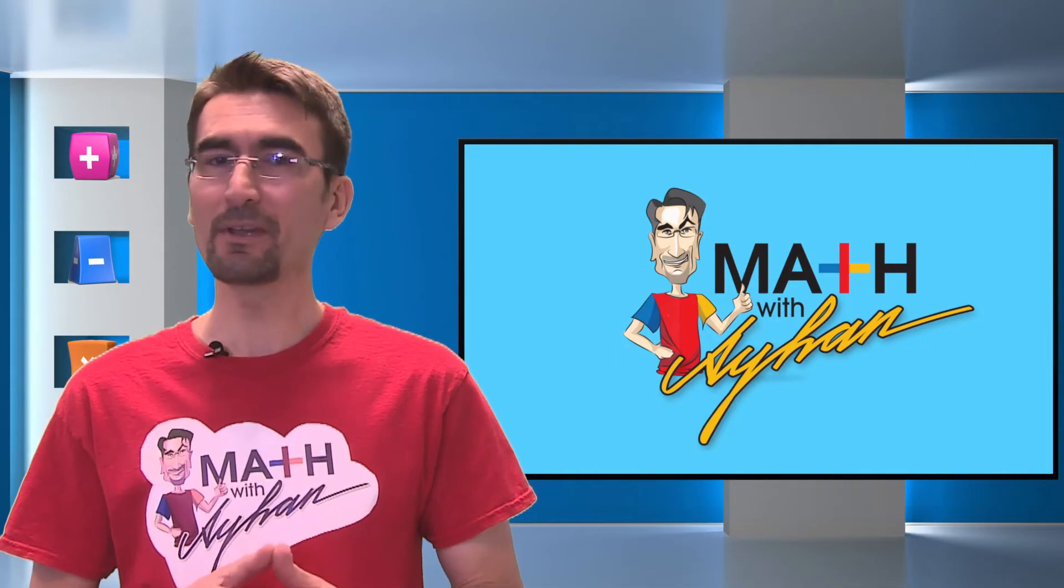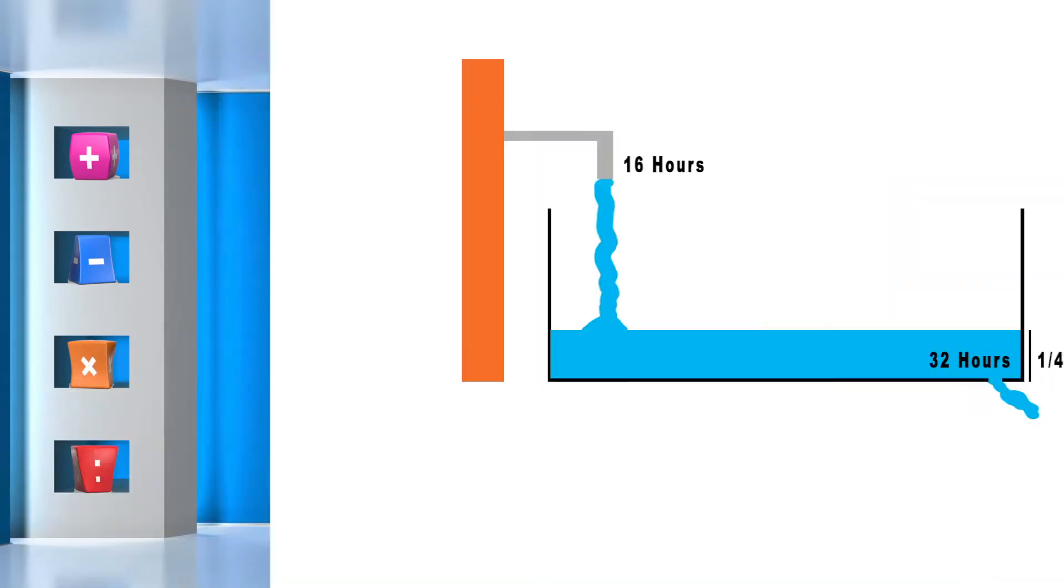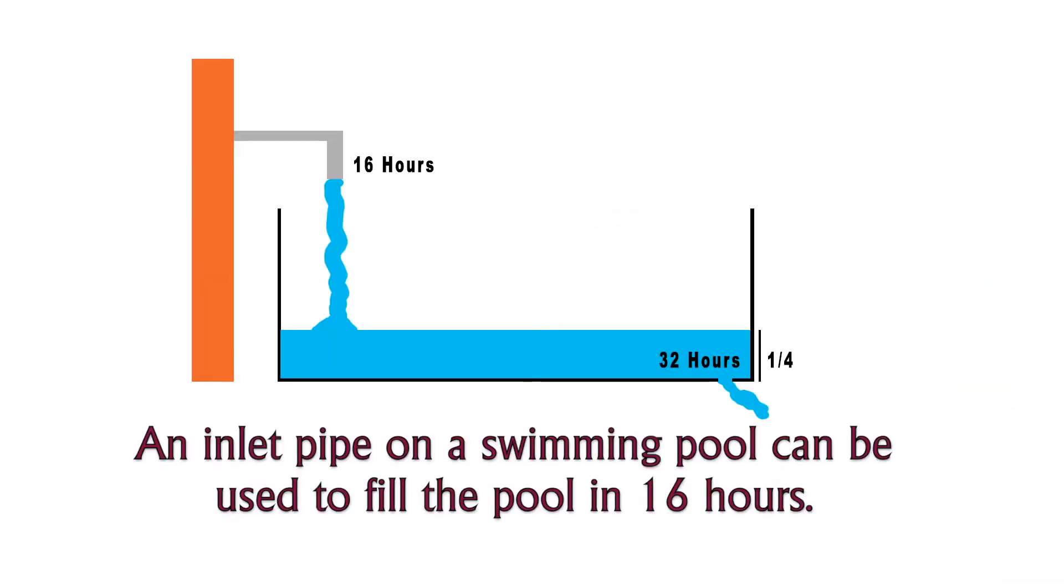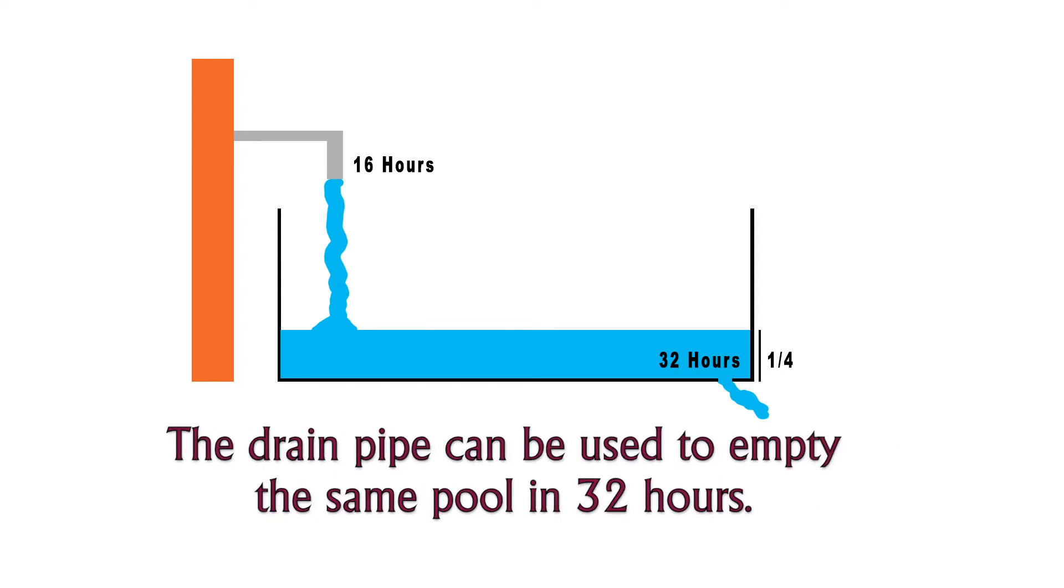This week we will be solving a work problem on pool filling. An inlet pipe on a swimming pool can be used to fill the pool in 16 hours and a drain pipe can be used to empty the same pool in 32 hours.